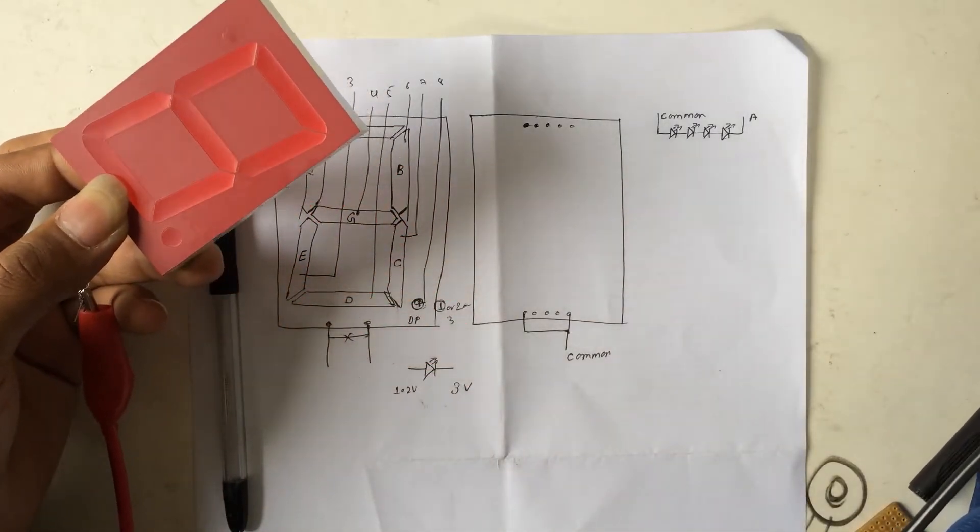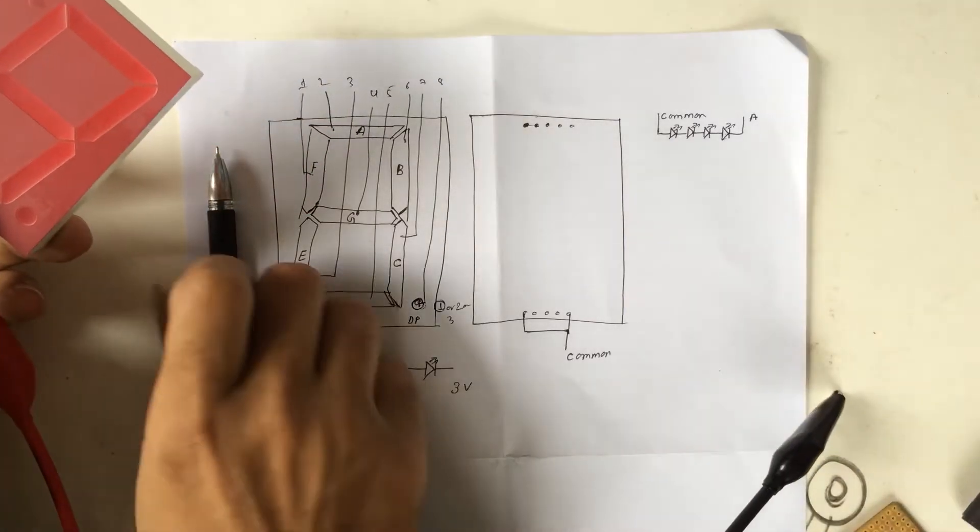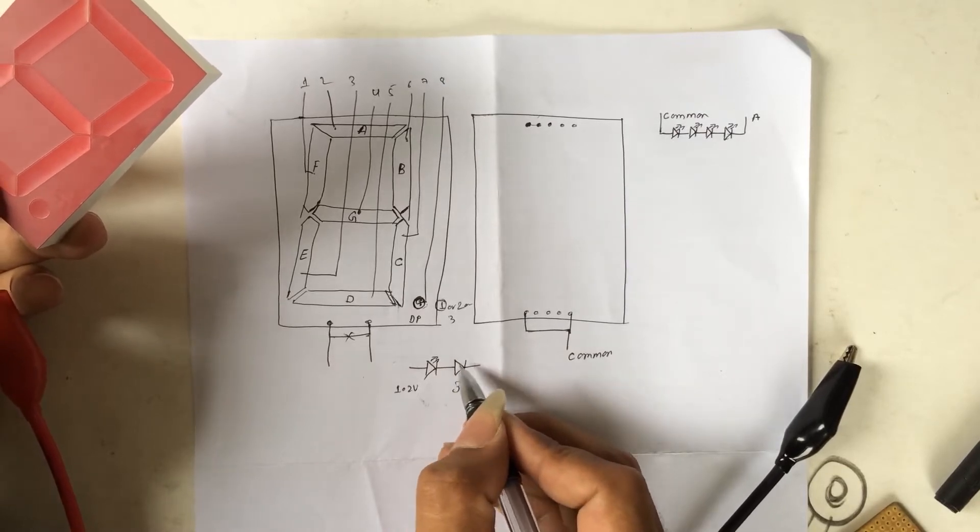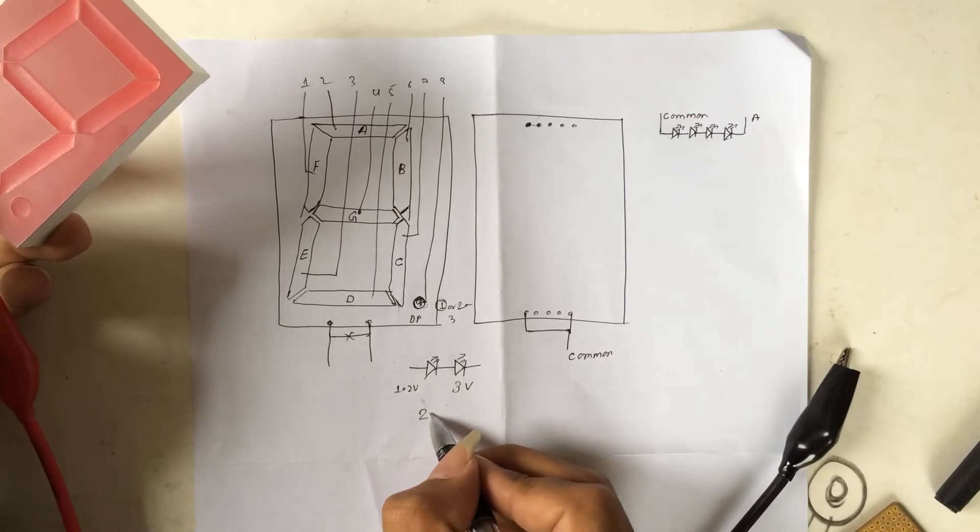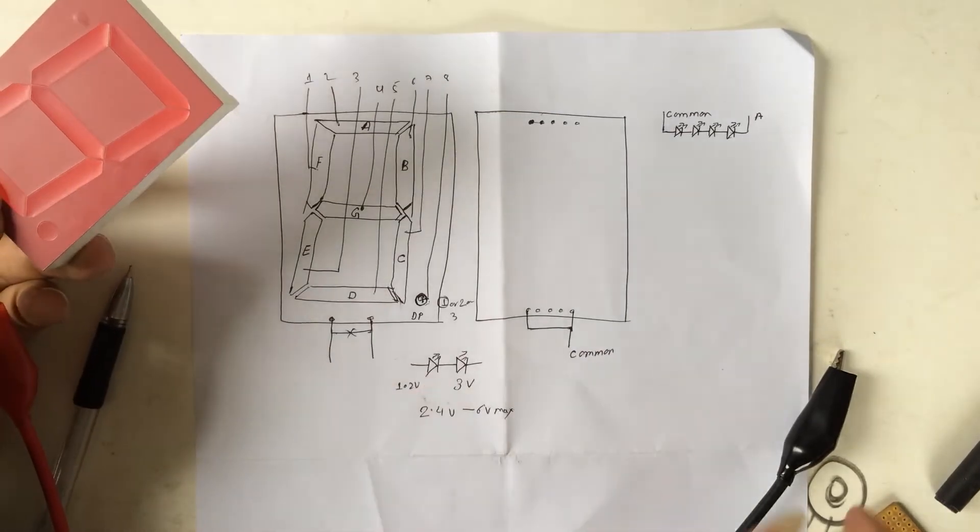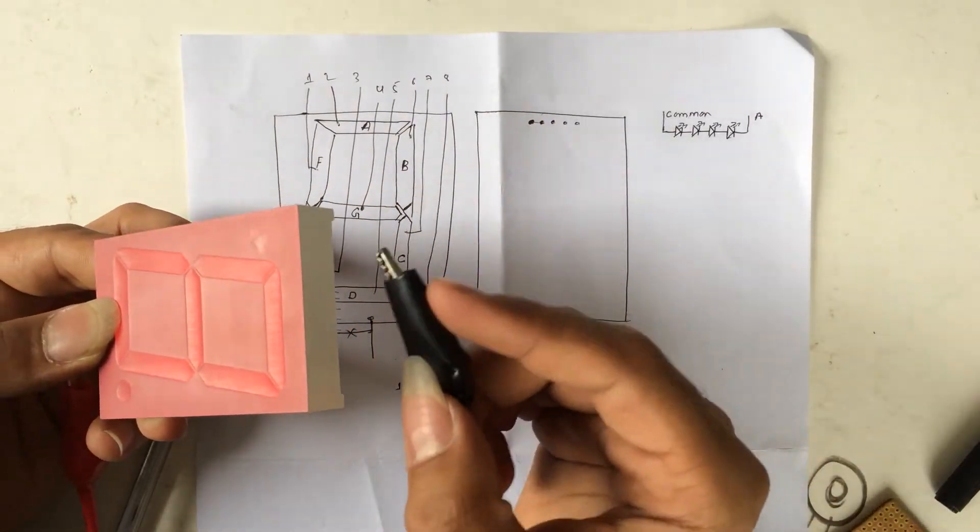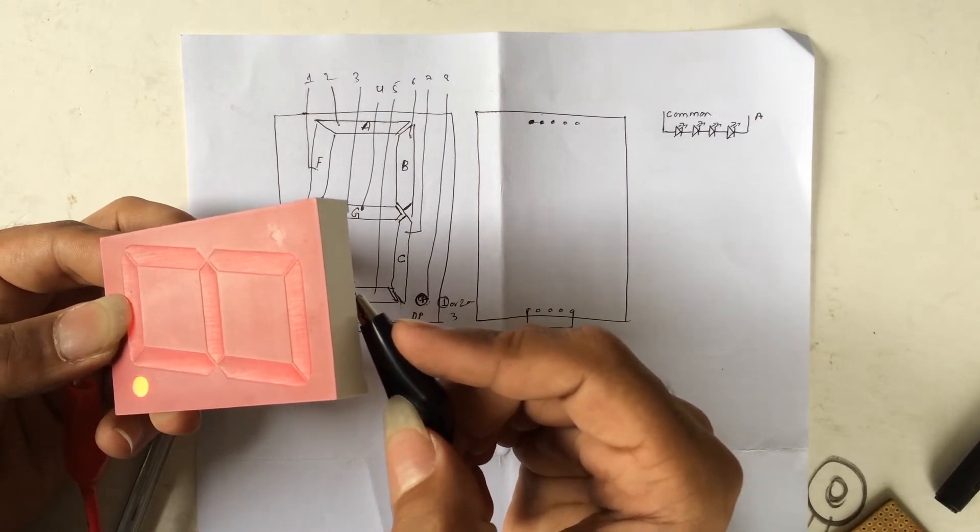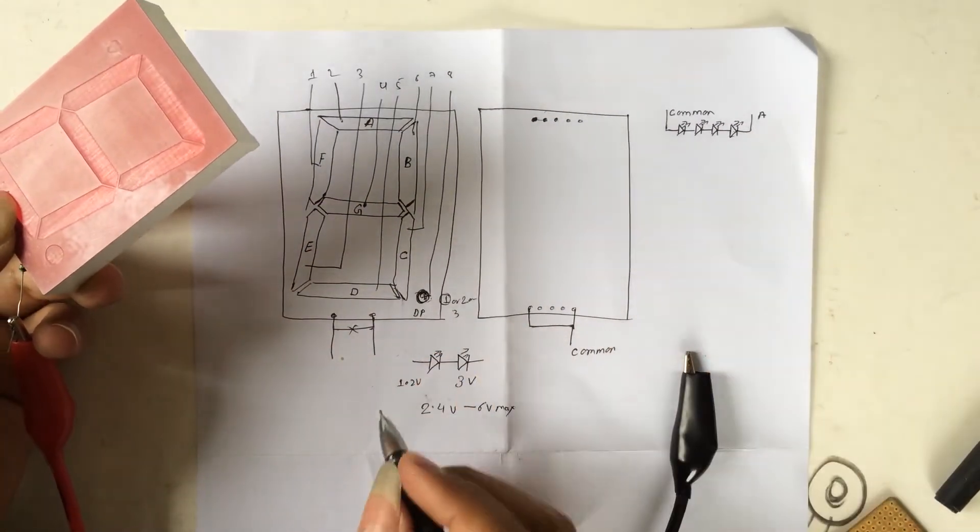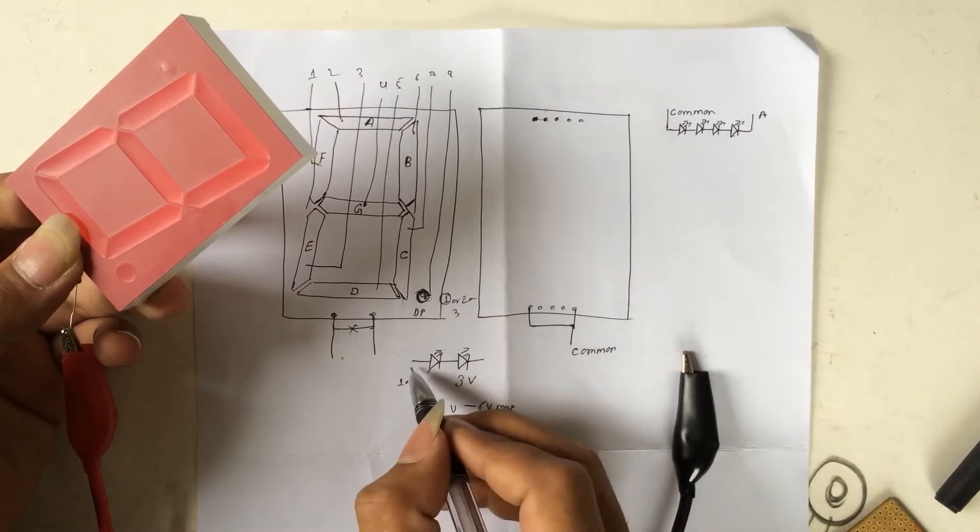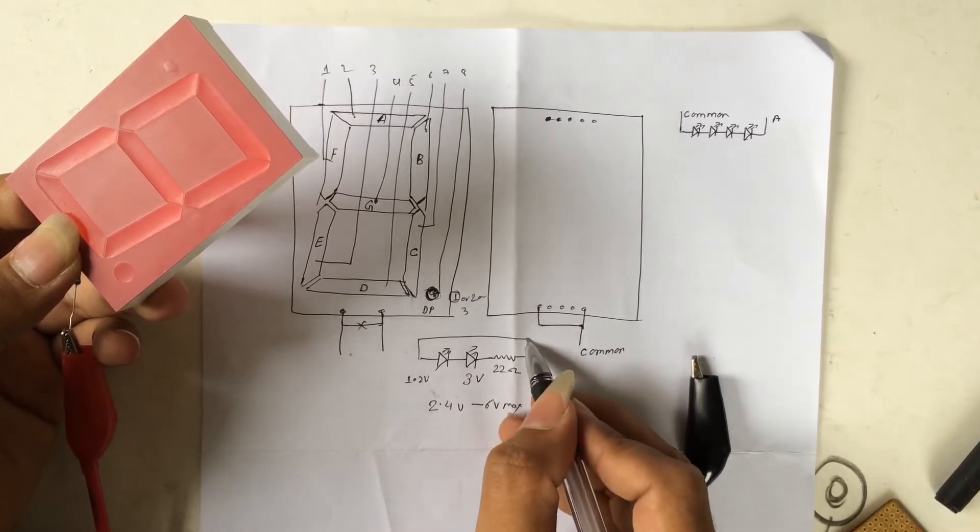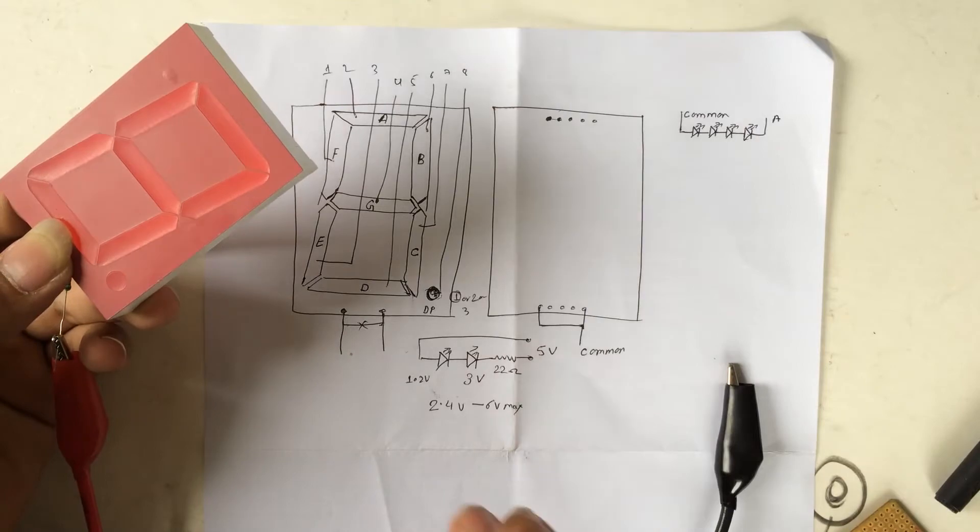So we will boost up to 5 volts now. This means this segment does not contain only one LED. So we can add another one. This can go from 2.4 volt to 6 volt max if that is of two LEDs. At 5 volt we have this LED on.